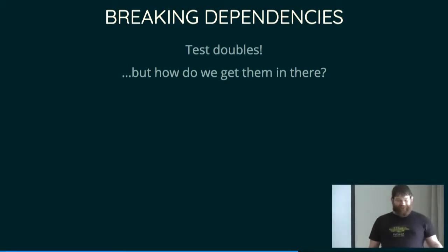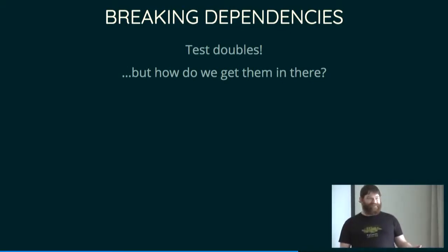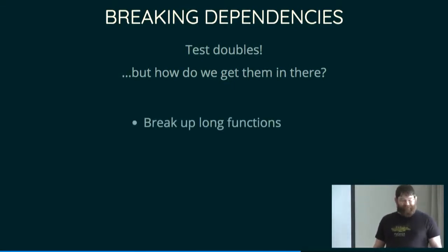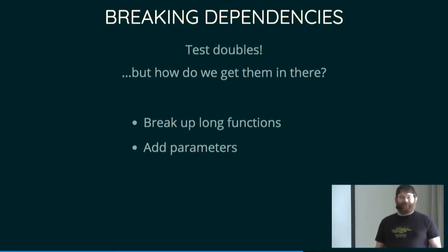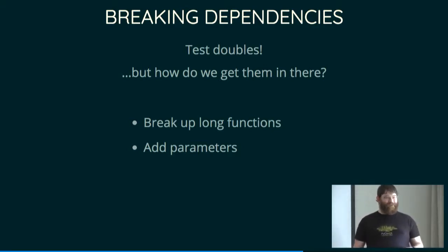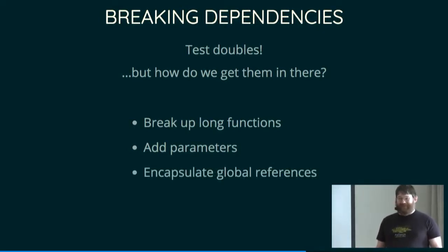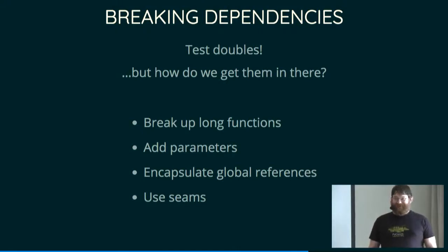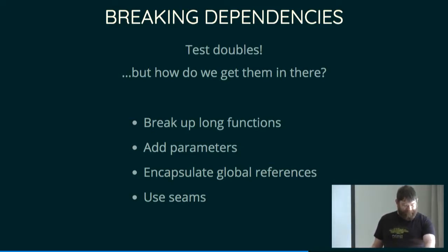So how do you get your test doubles into the places where they need to be? In order to call your fake database, you need the fake database to be where the real database usually is. So: break up long functions, like I did earlier. Add parameters to things, which is more or less the same except you're moving the get session or whatever you're calling to the place where the function is called. Encapsulate global references, which is a wonderful technique I'll explain in a moment. And use seams, which I'll explain just after that, because it's a really cool thing that is hard to explain briefly.